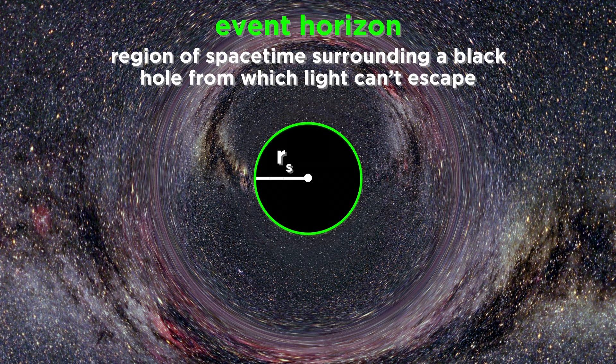This is the region of spacetime surrounding the black hole within which light can't escape, and for a non-rotating black hole, the distance to the event horizon is equal to the Schwarzschild radius.